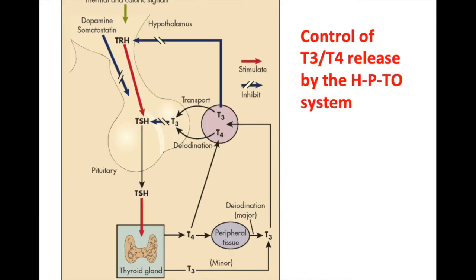The control of thyroid hormone release is through the hypothalamus-pituitary-thyroid gland axis. Thermal and caloric signals stimulate or inhibit the release of TRH from the hypothalamus. TRH release then stimulates the pituitary to release TSH, which stimulates the thyroid gland to grow and to release T4 and T3. T4 is the predominant form released and is usually converted to T3 at peripheral tissue, although a minor amount of T3 is released directly.